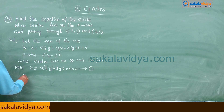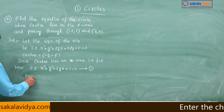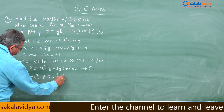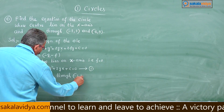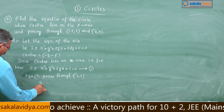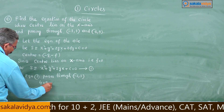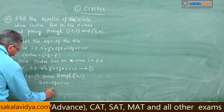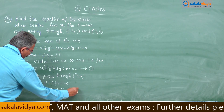Equation 1 passes through minus 2 comma 3. Substituting, we get 4 plus 9 minus 4g plus c equals 0, which gives minus 4g plus c equals minus 13. Call this equation 2.